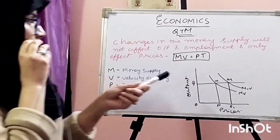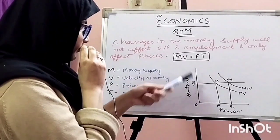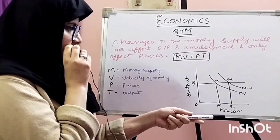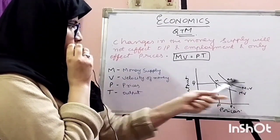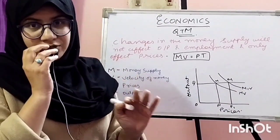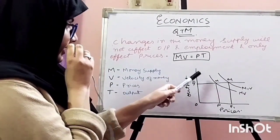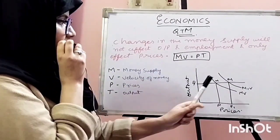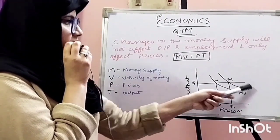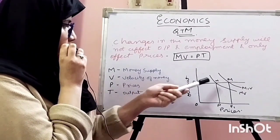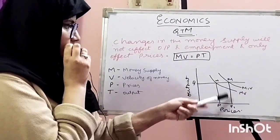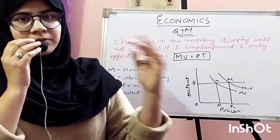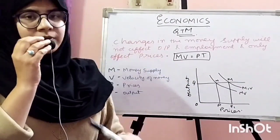From the curve, on the Y-axis, output is taken, and on the X-axis, prices are taken. The output line is horizontal, meaning output is not going to change in the short run. MV is the initial money supply and OP is the initial price level. If the money supply increases from MV to M1V, you can see that output does not change — it remains on the same line — but prices change from OP to a higher level. So the theory says: money supply changes affect only prices, while output and employment remain constant.